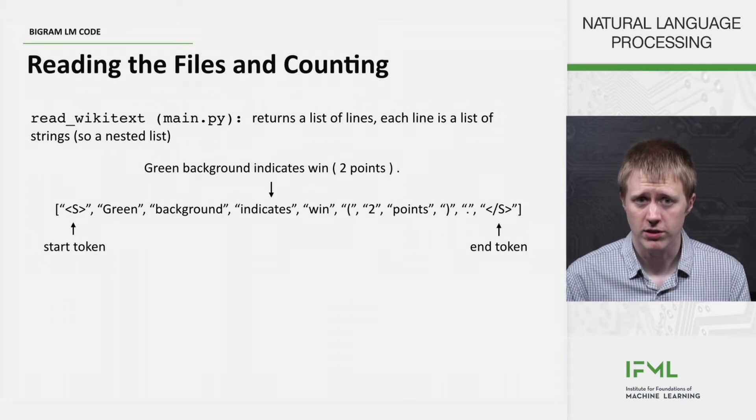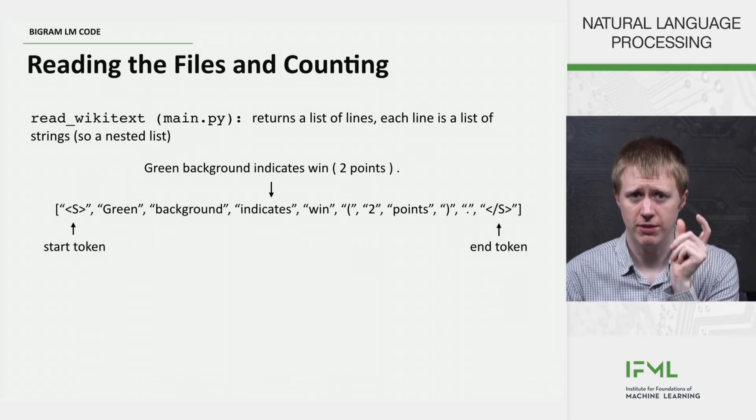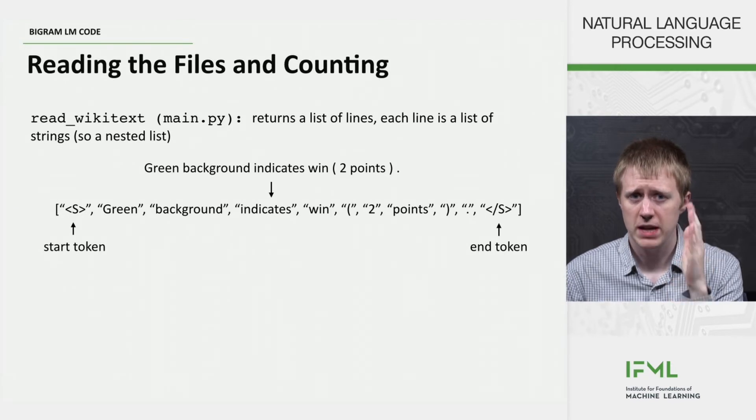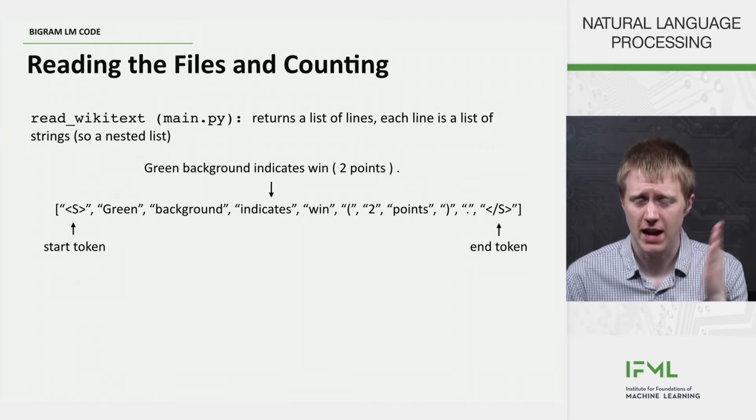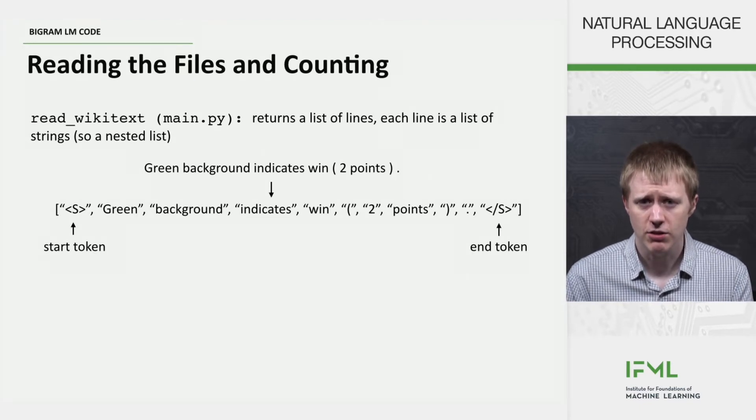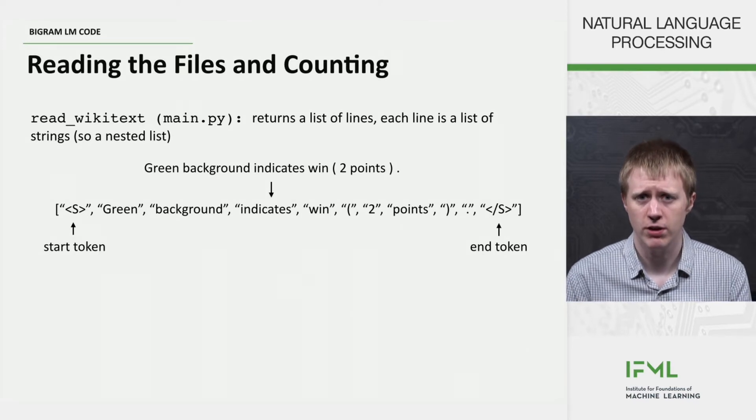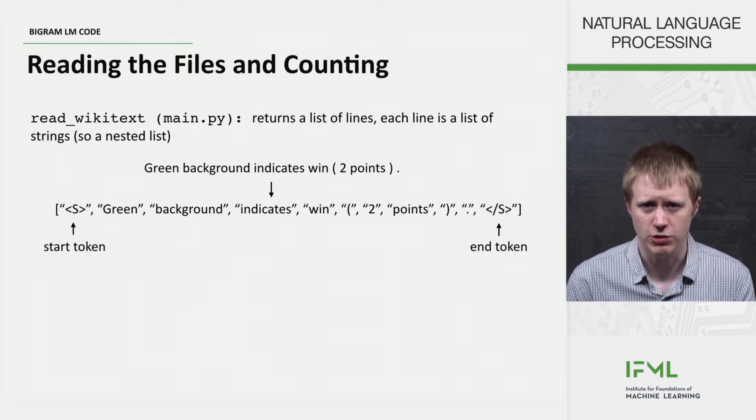These are just placeholder tokens. The reason for the start token is when we think about the distribution of the first word, we need to condition on something. And so there has to be this kind of placeholder token at the very beginning in order to do that. And the end token essentially tells us when to stop. It tells us that this line is over. We're not going to be using that too much here though.